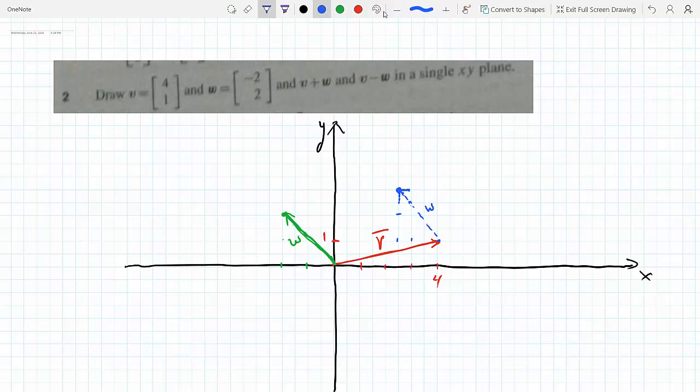I can join the tip to the tail here, so tip of V to the tail of W, and this here would be V plus W. Now let's do the last one: V minus W.